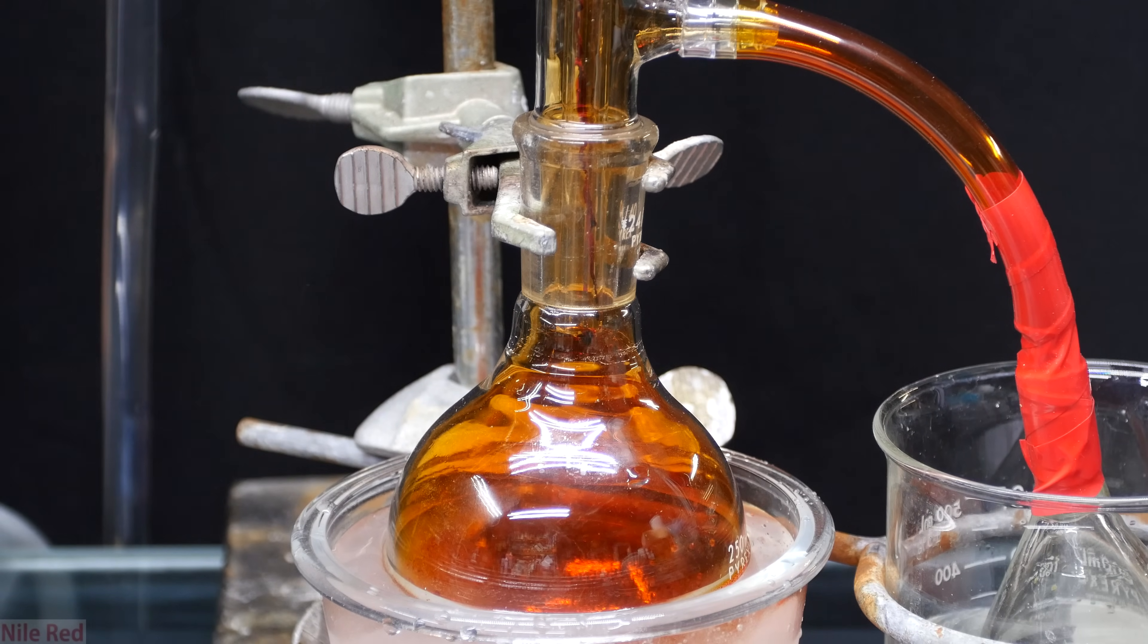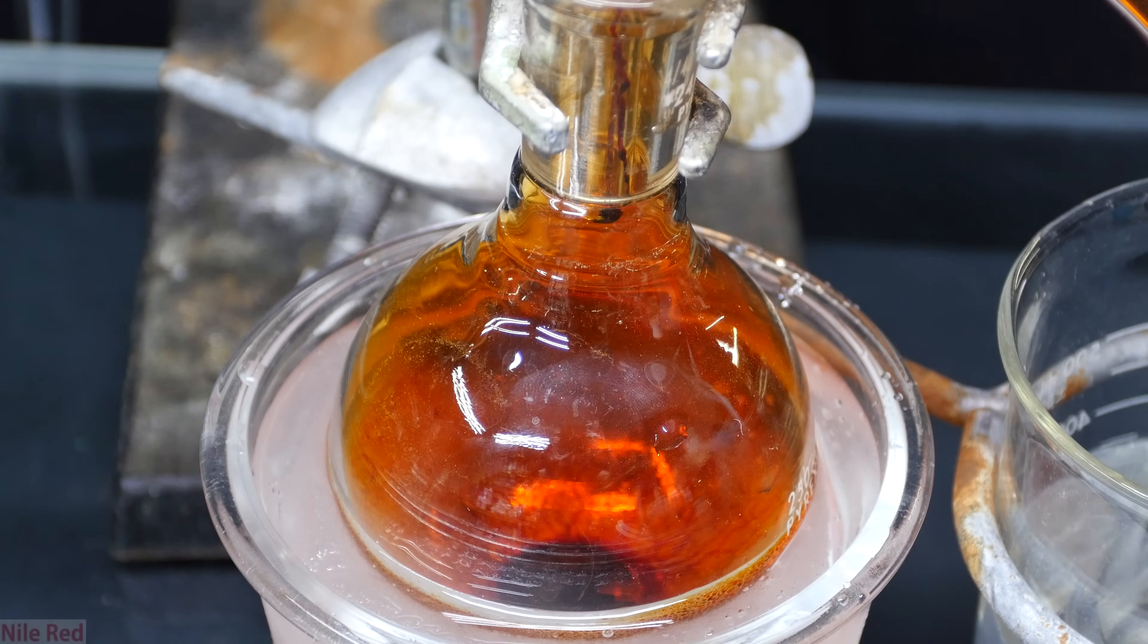Eventually, some very nice, nearly black drops of bromine will start to come over. At the bottom of the receiving flask, we can see the black, dark bromine liquid starting to build up.